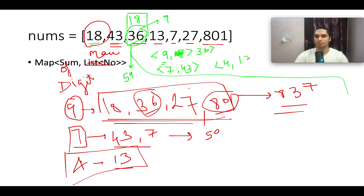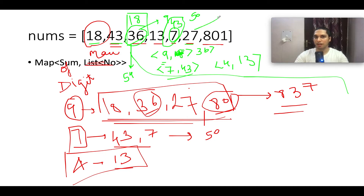Next we see 7, digit sum 7. The map has entry 43 for key 7. So 7 + 43 = 50, giving another candidate answer of 50. Next is 27, digit sum 9. The map has value 36 for key 9. So 36 + 27 = 63, giving candidate answer 63.